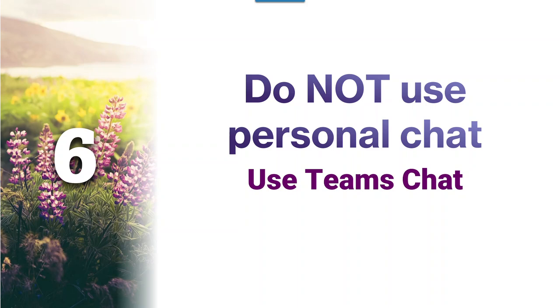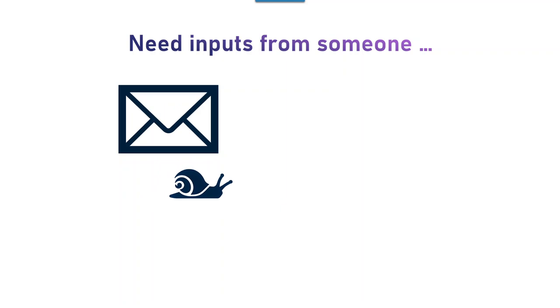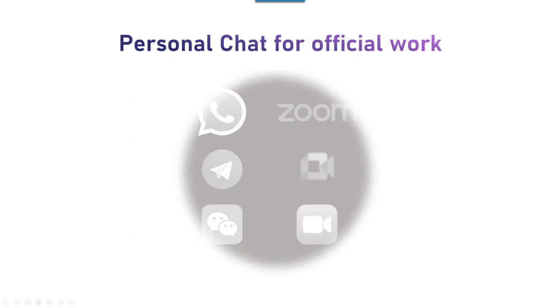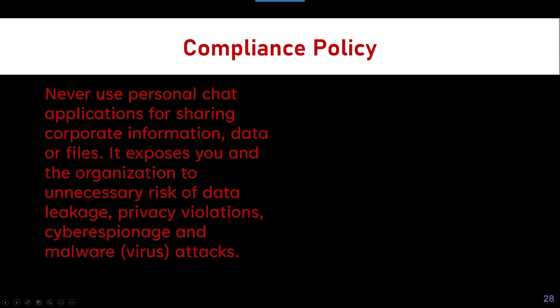When it comes to chat — why do people use chat for communication? If inputs needed are not urgent, you send a mail. But very often we need something urgently and can't wait for a mail reply — so chat is fast. The problem is many of us are already used to personal chat applications for day-to-day personal work, and we just continue using the same software for corporate communication. That is a very dangerous thing. You probably already have a compliance policy, but it may not be strictly followed — especially for personal chat, because everyone is so used to it.